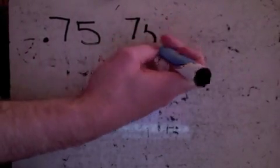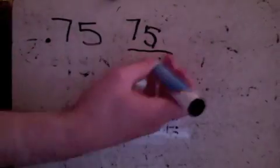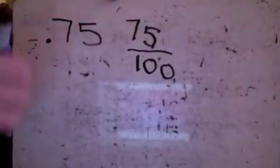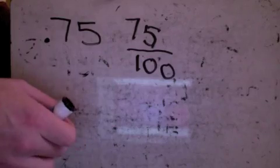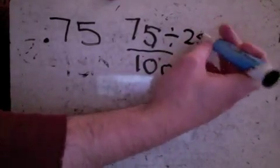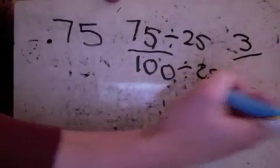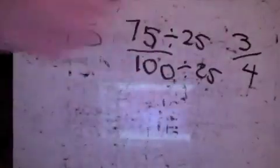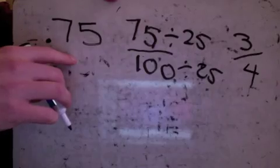The next decimal is seventy-five hundredths. Again, I write it with the number on top and the label on the bottom — hundredths — giving 75/100, exactly how it sounds. To reduce, I'll divide by twenty-five since the larger the number I use, the fewer steps I need. Seventy-five divided by twenty-five is three, and one hundred divided by twenty-five is four, giving three-fourths.